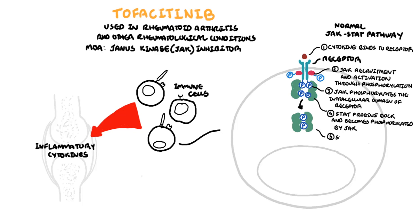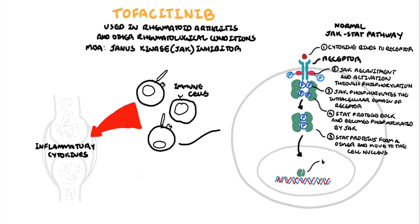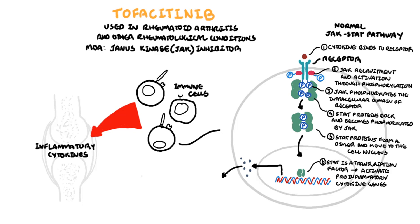The STAT proteins form a dimer and move to the cell nucleus. STAT is a transcription factor which essentially activates pro-inflammatory cytokine genes, making pro-inflammatory cytokines the end product. These cytokines play a key role in rheumatological diseases such as rheumatoid arthritis.